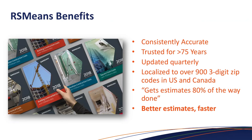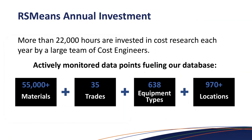The RSMeans benefit: these guys have been around producing construction cost data for over 75 years. It's highly accurate and updated quarterly, taking into account gyrations in the material and labor markets, supply and demand. It's tied down to the three-digit zip code, so it's localized. Their mantra over 75 years has always been to help organizations get estimates about 80 percent of the way there, then use in-house or local knowledge to refine to near 100 percent.